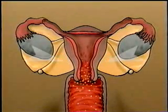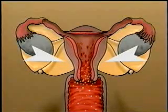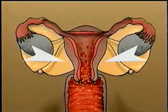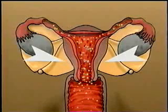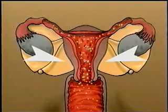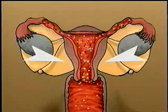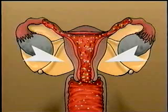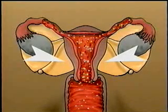At the time of menses, contractions reach maximum intensity, causing a retrograde flow of menstrual blood into the fallopian tubes. Such a massive influx of contaminated endometrial material precipitates PID.